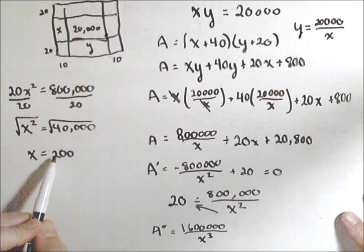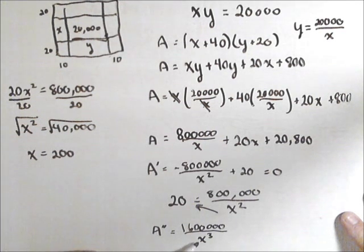Now the way the second derivative test works, you plug in your critical value into the second derivative, and if I plug in 200, I get a positive number. I'm not worried what the number is, it's positive.